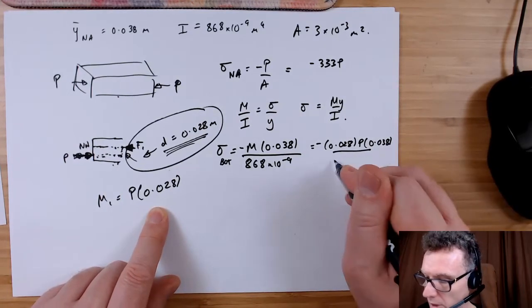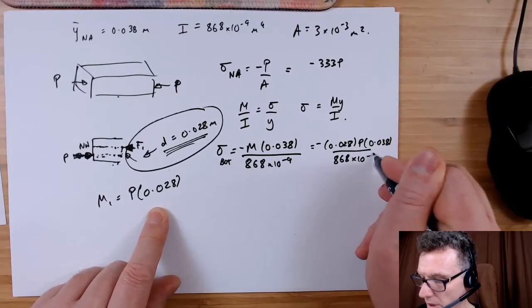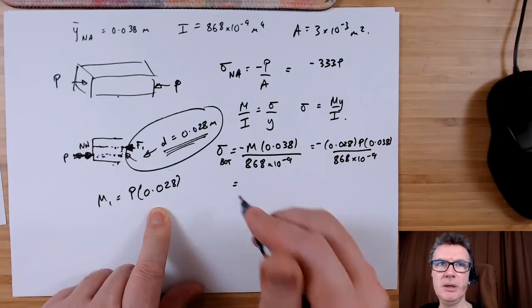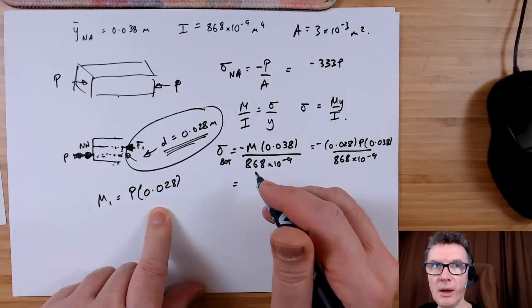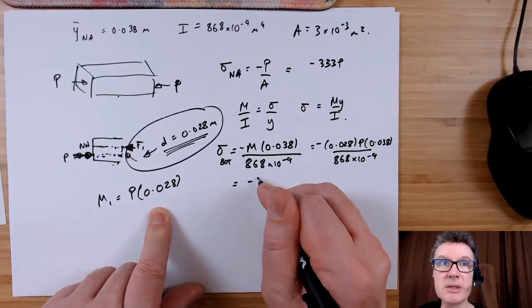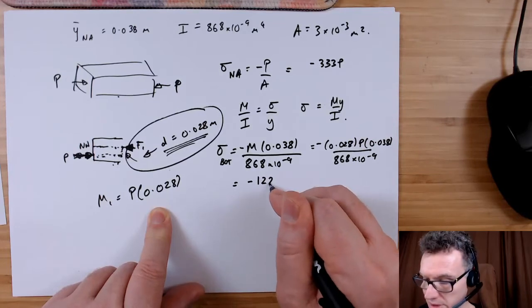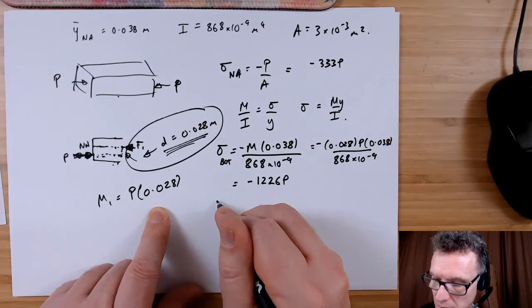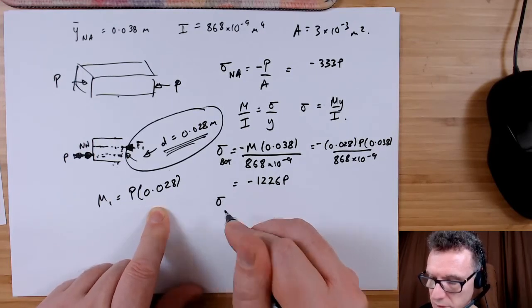Divided by 868 times 10 to the minus 9, so that will give me minus 1226 P if you work it out. Now I can do the similar thing for the stress at the top.